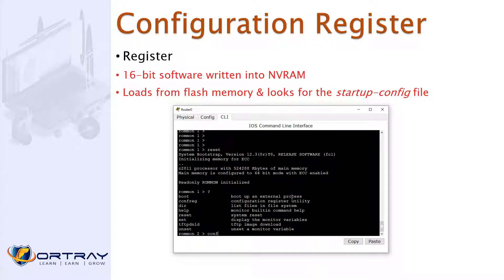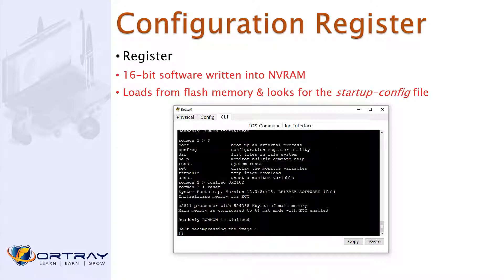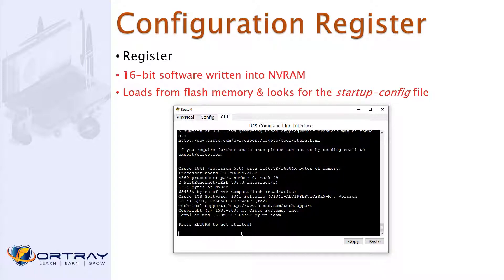Now I change the configuration register value back to the default. You can see the router is now looking for the flash — the operating system is loaded. Since the IOS image in the router is compressed, it decompresses the image and then looks for the valid configuration file.